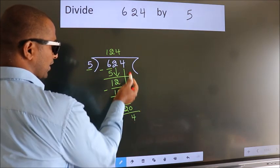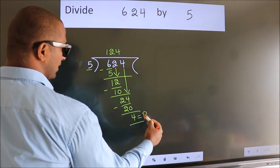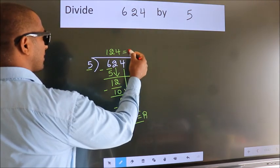No more numbers to bring it down. So we stop here. This is our remainder. This is our quotient.